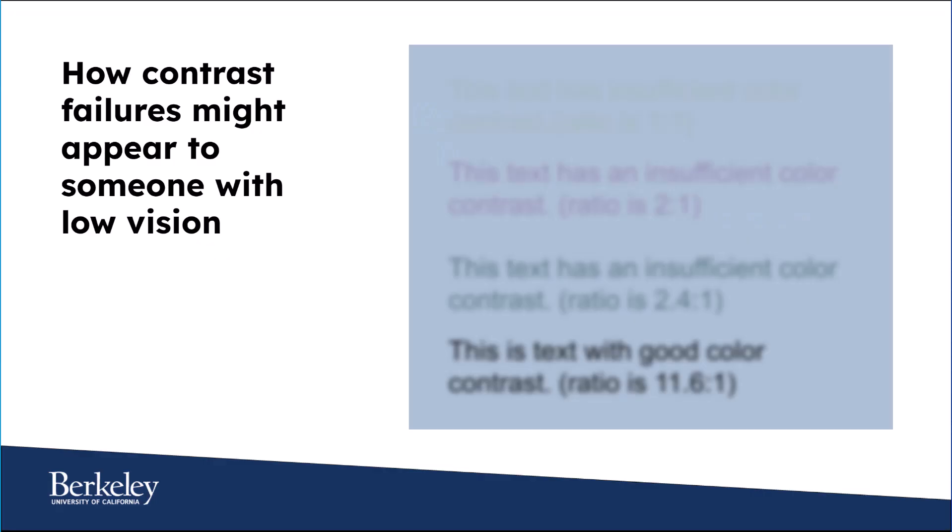Here are the same examples as they might appear to someone with vision loss. In this photo, we see the same text in four colors, but there is less contrast overall and some blurring. The lower contrast text is hard to see.